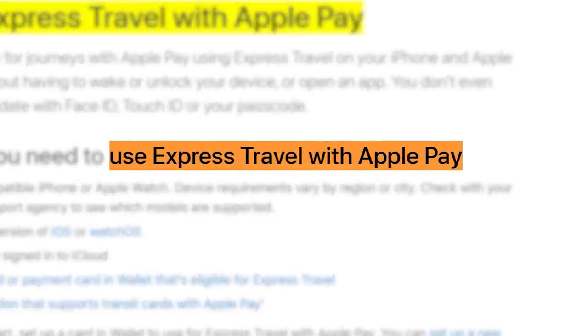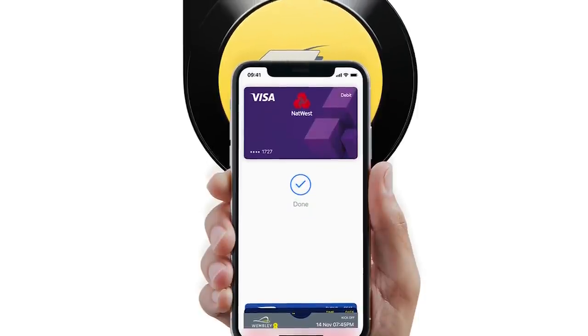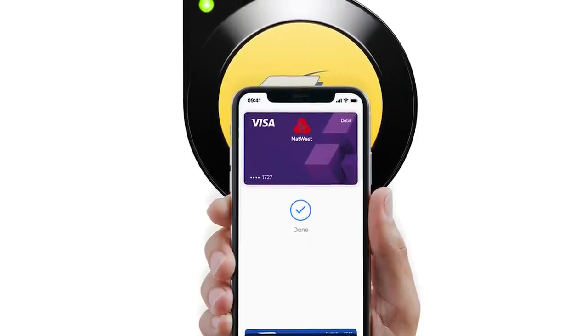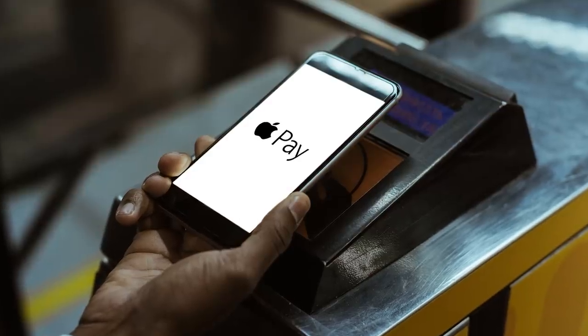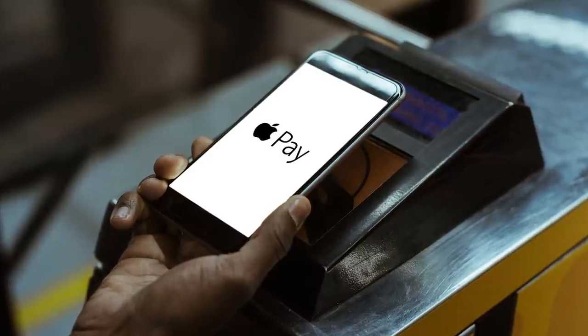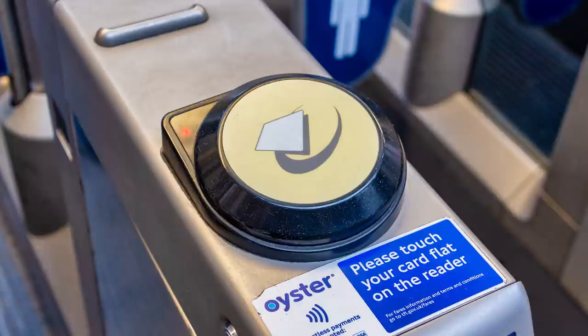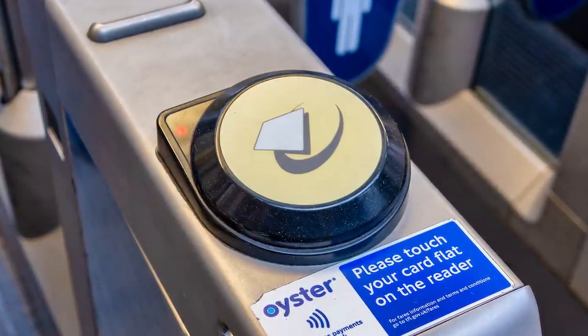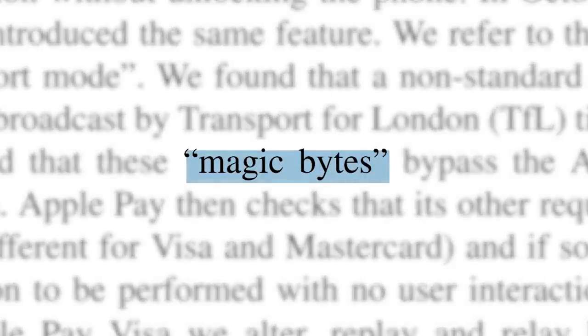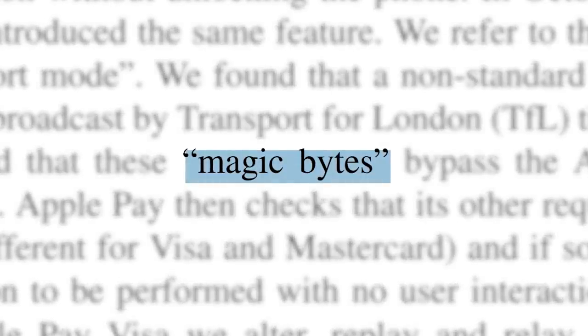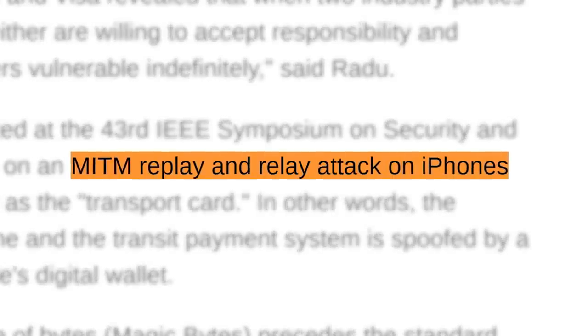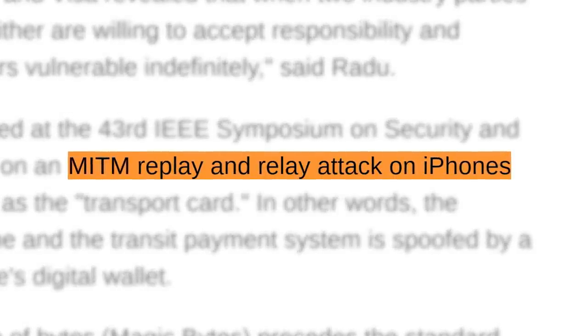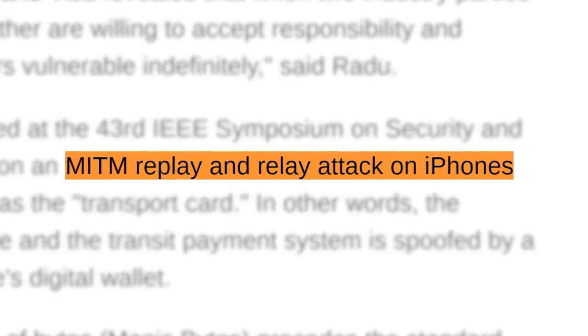The vulnerability works by exploiting iPhone's express travel feature. Usually you have to unlock your iPhone to use Apple Pay, but this feature allows you to use Apple Pay whilst locked, but only with certain pre-approved travel networks. This makes it easy to pay for public transport on the go without unlocking your phone every time you get on a bus. The researchers found that these pre-approved public transport card readers transmit what they dubbed 'magic bytes,' which are able to unlock Apple Pay without user authentication. By replaying these magic bytes to a target phone, they could trick it into thinking it was a legitimate payment terminal.